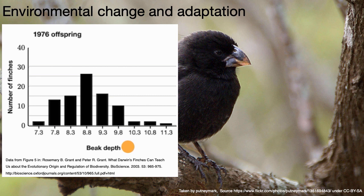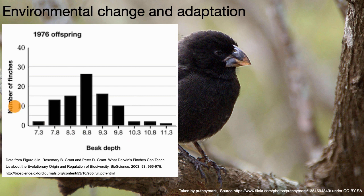What would have happened to the distribution of beak depths over the course of the next two years? The finches with larger beak depths are more likely to survive, because they're more likely to be able to crack the larger seeds. And the finches that are more likely to survive are also more likely to reproduce and pass their large beak trait to their offspring.